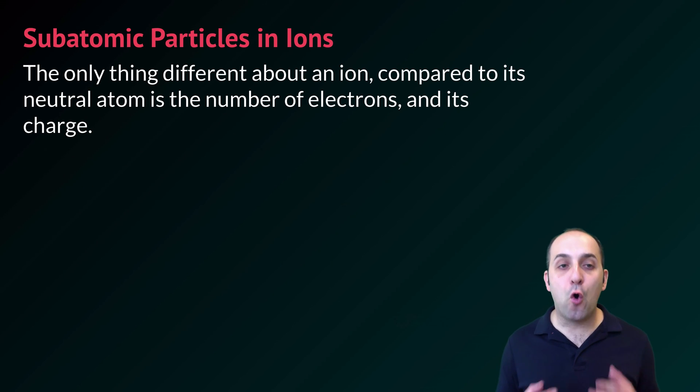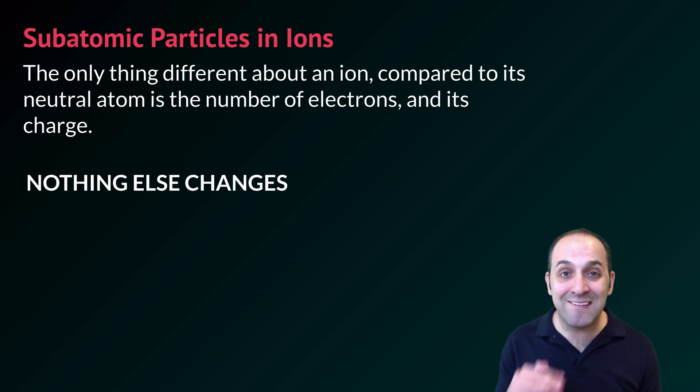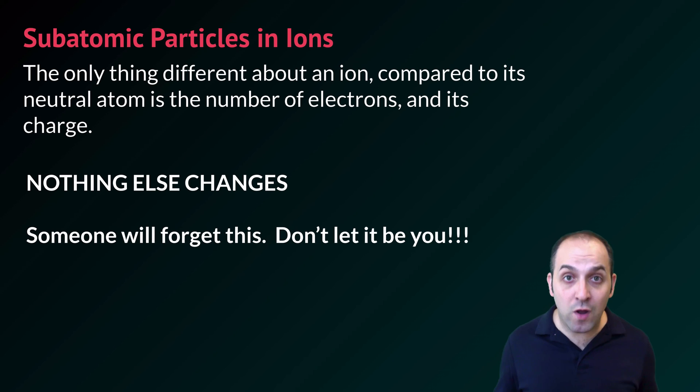It's important to remember that the only thing about an ion that changes compared to its neutral atom is the number of electrons and its charge. That's it. Nothing else changes. Not the number of protons, not the number of neutrons. Someone who's watching this video is going to forget this at some point in their lives. Don't let it be you.